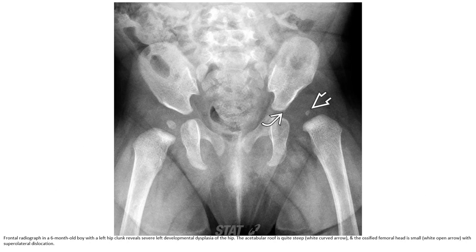This is a radiograph in a 6-month-old boy with left hip clunk, revealing severe left developmental dysplasia of the hip. The acetabular roof is quite shallow and the ossified femoral head is small, with superior lateral displacement.